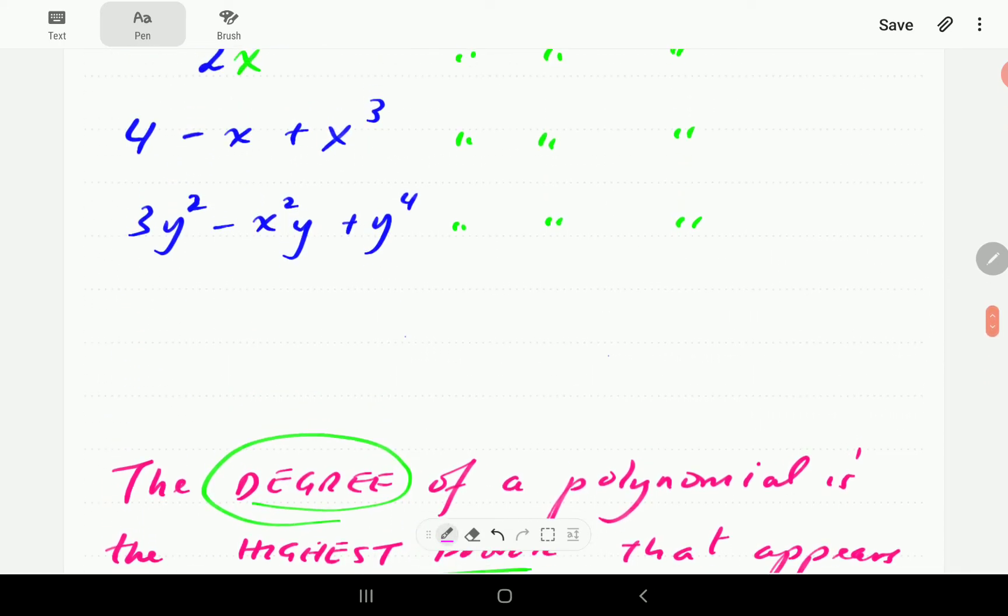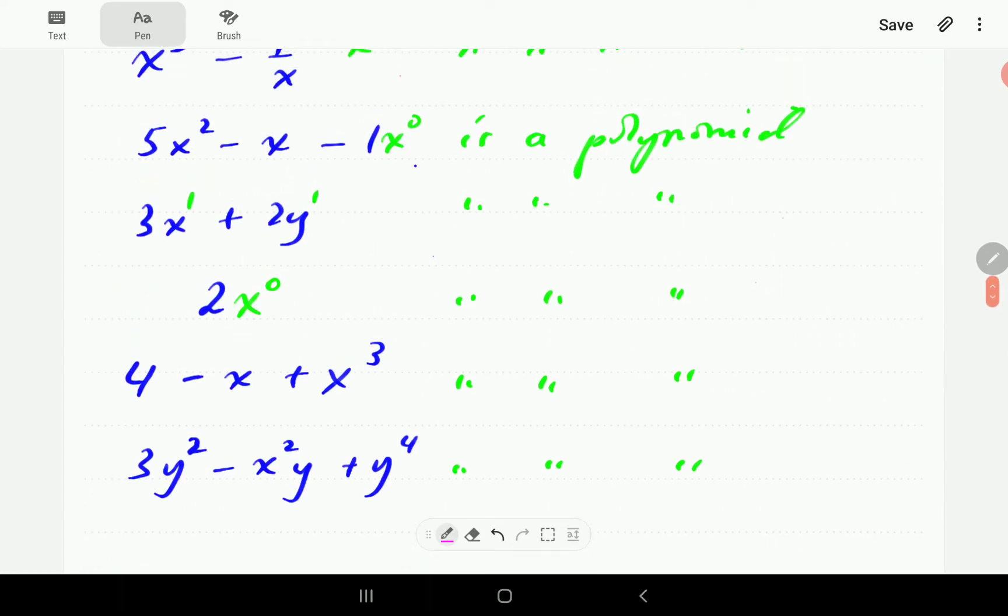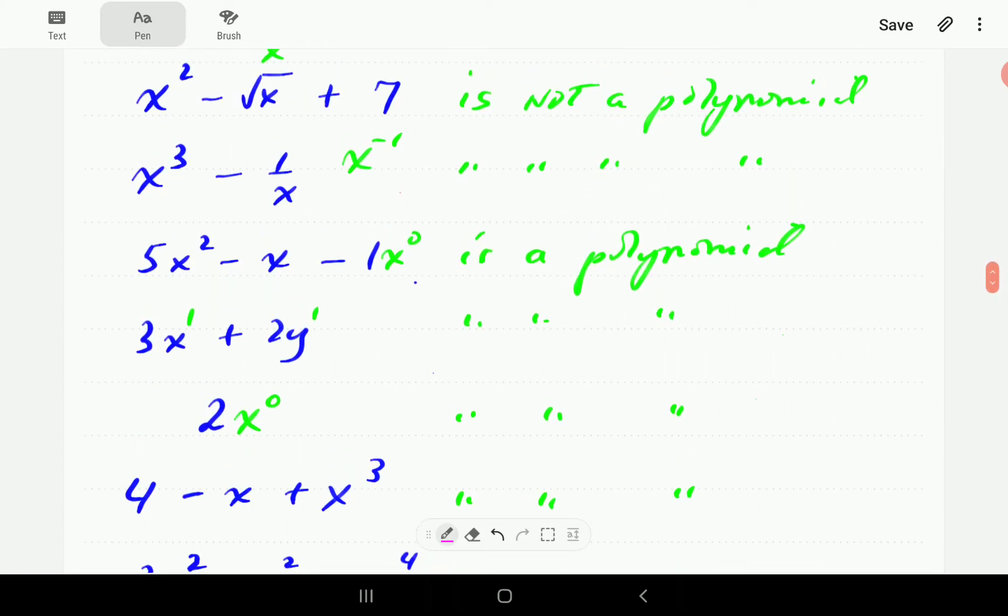So just going back to the polynomials we saw here. So this polynomial here would be a polynomial of degree 2, because the highest power is 2. For this next one, the highest power is 1. So this is a polynomial of degree 1.